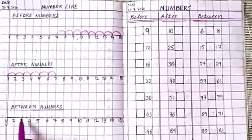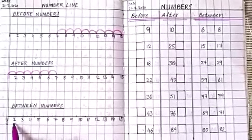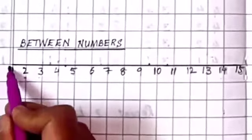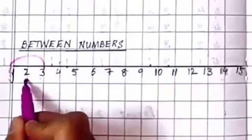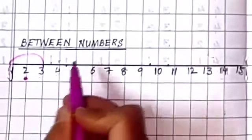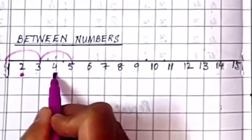And now here, between numbers. So let us do on the number line. Between number means the middle number. Between 1 and 3, what is the number? 2. 2 is a between number. Between 3 and 5, 4 is a between number.